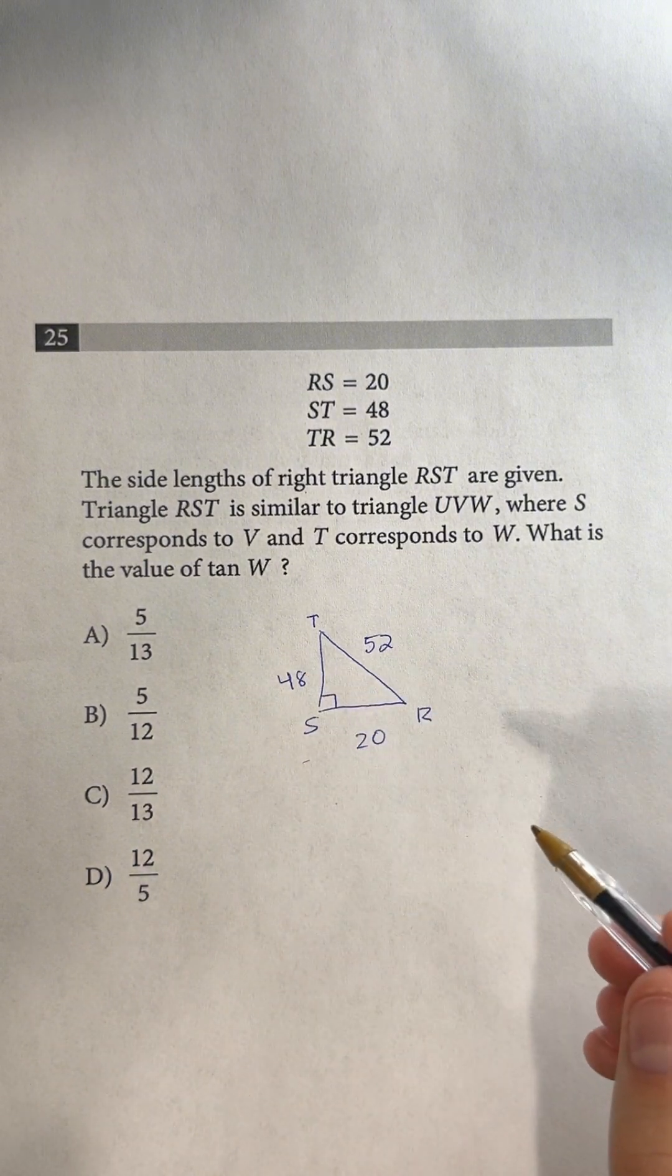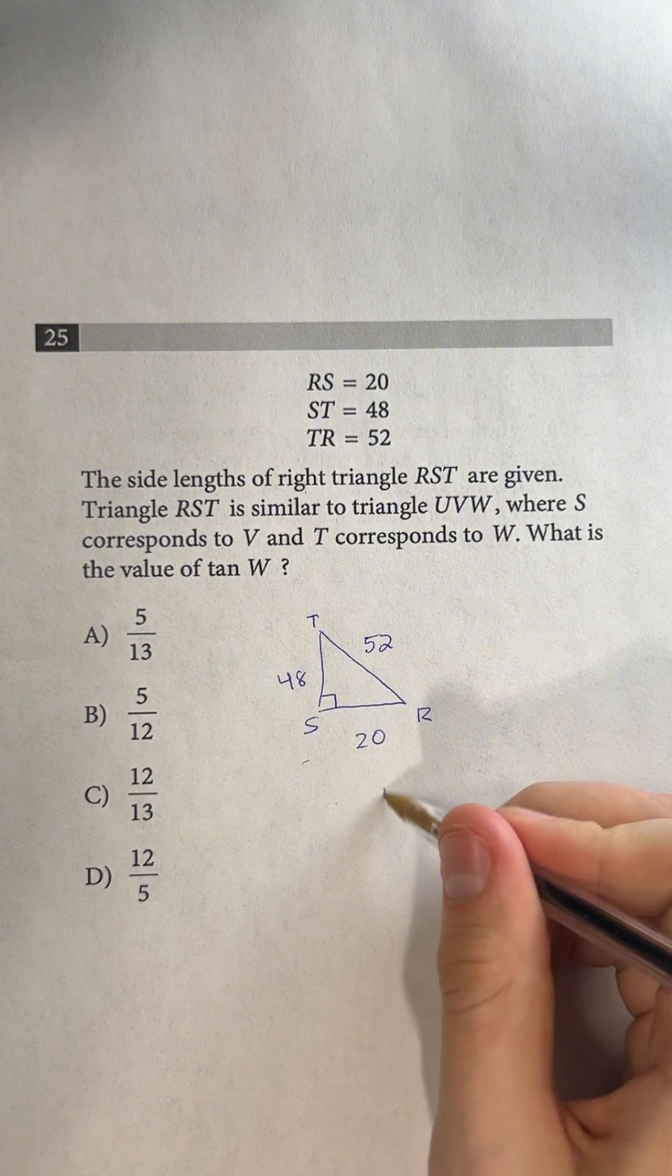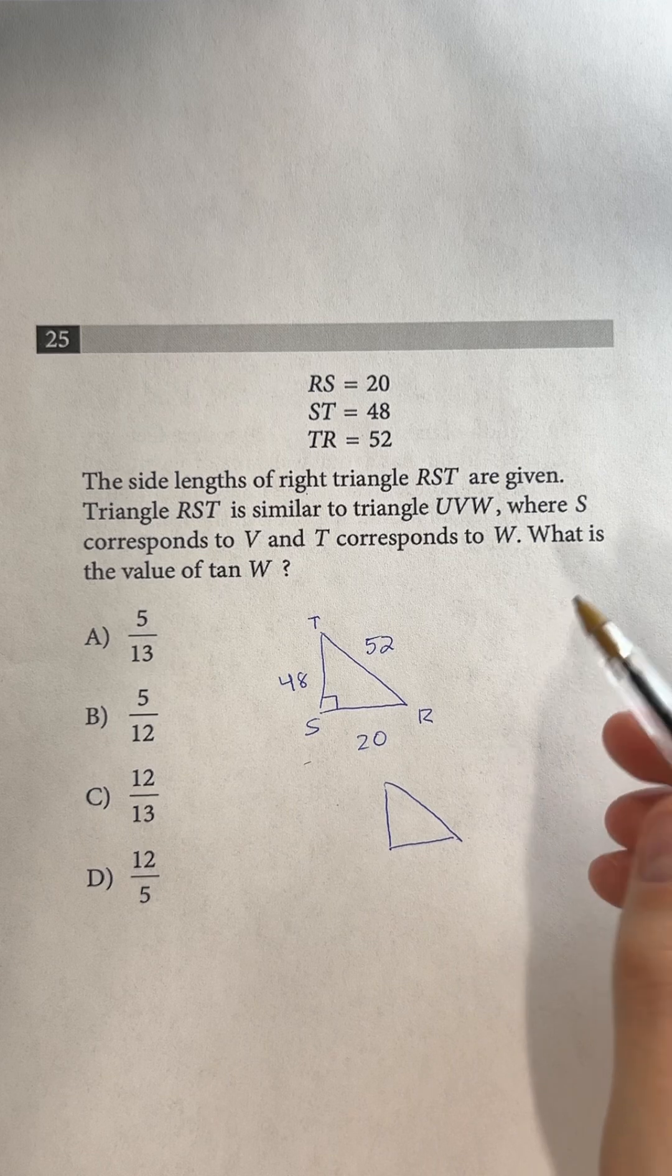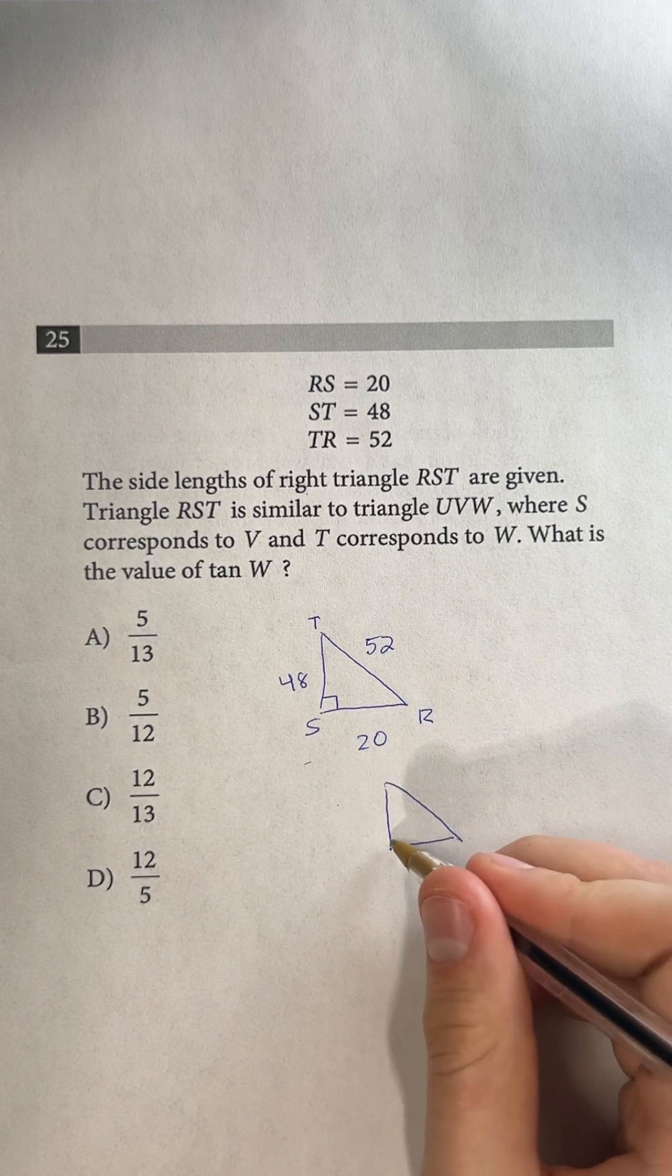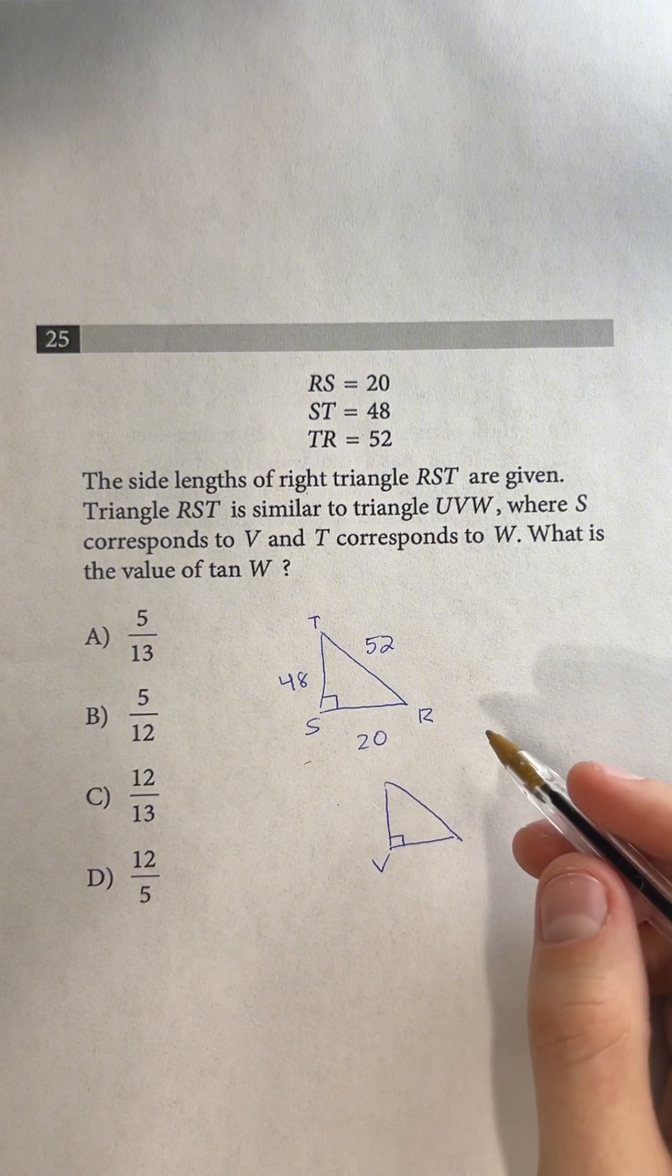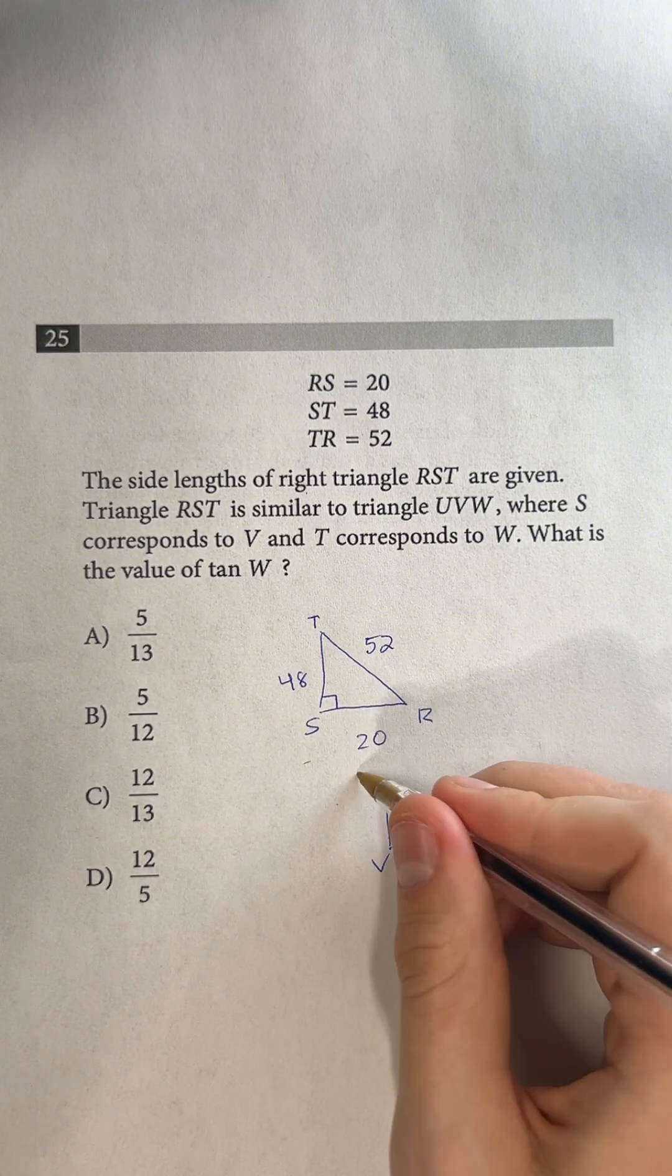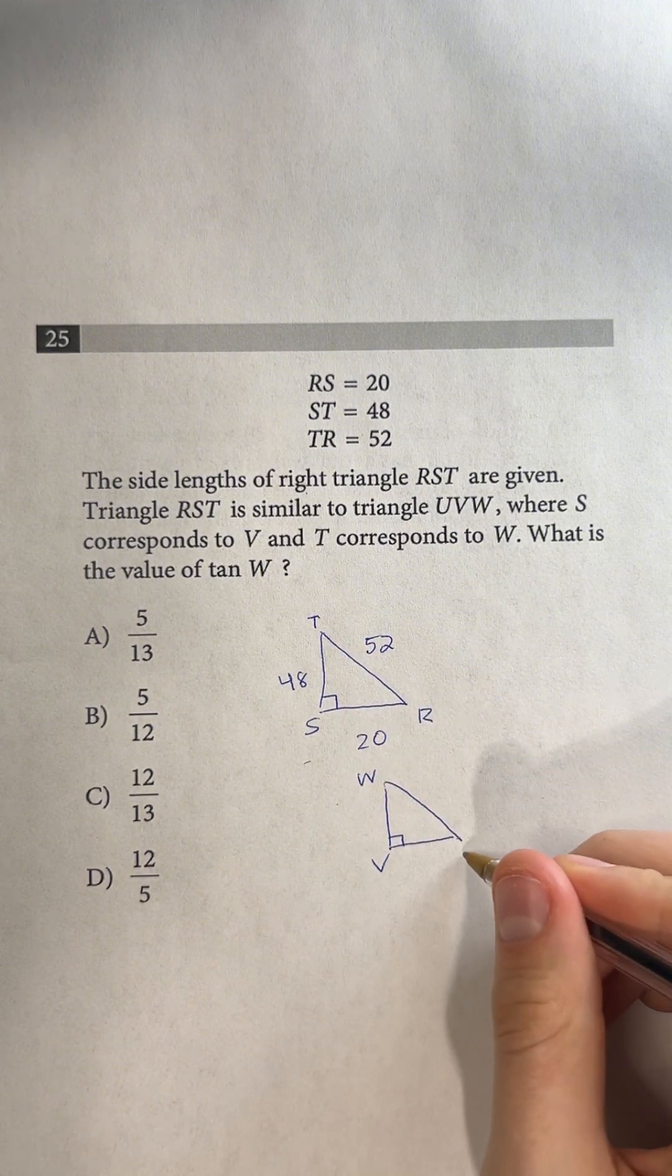So we have this triangle here. And then we know that this is similar to triangle UVW, where S corresponds to V. So S is this bottom left, so we know that this is going to be V. And T corresponds to W. So this top one is going to be our W, and so our missing one is going to be the U.